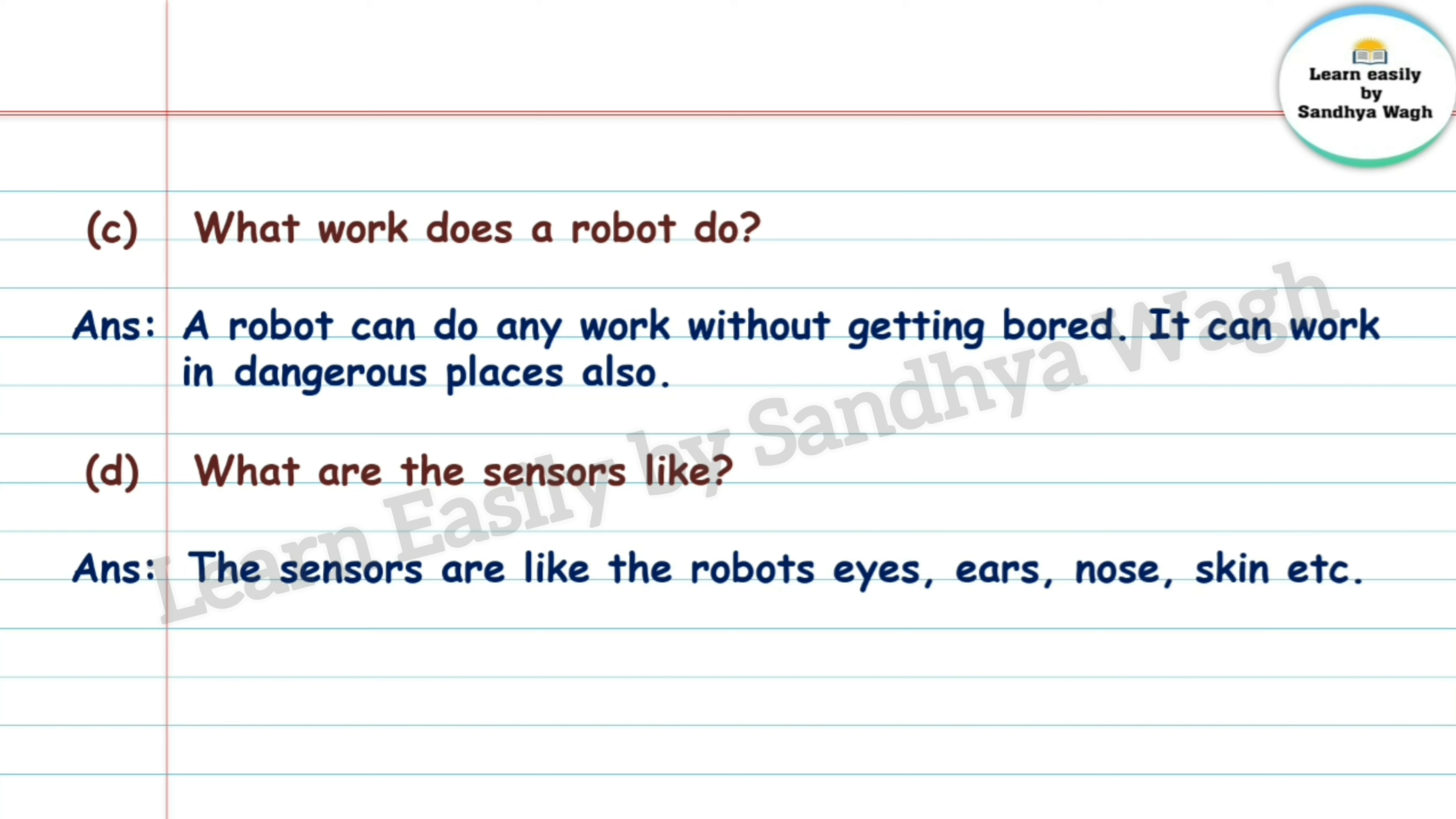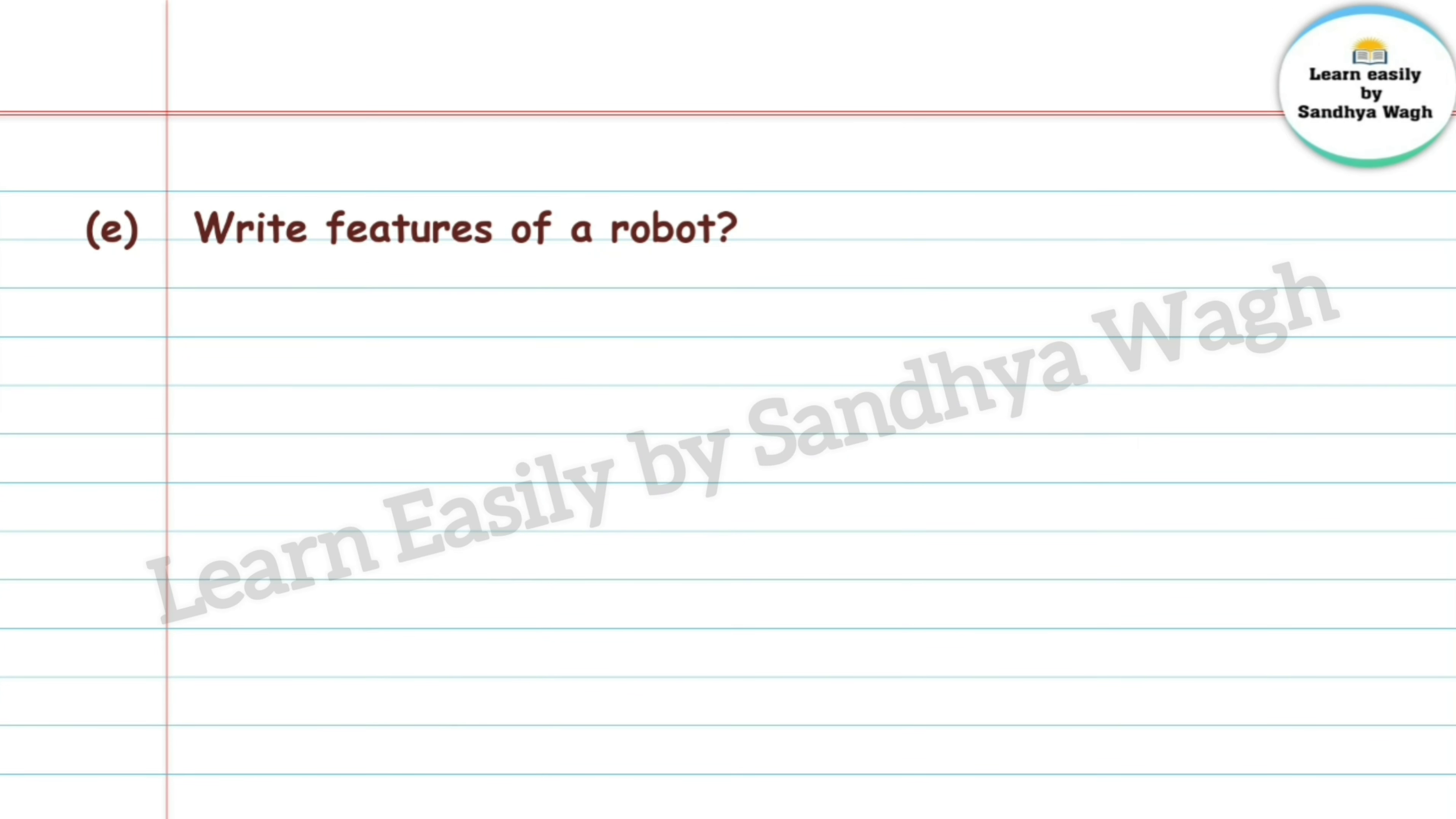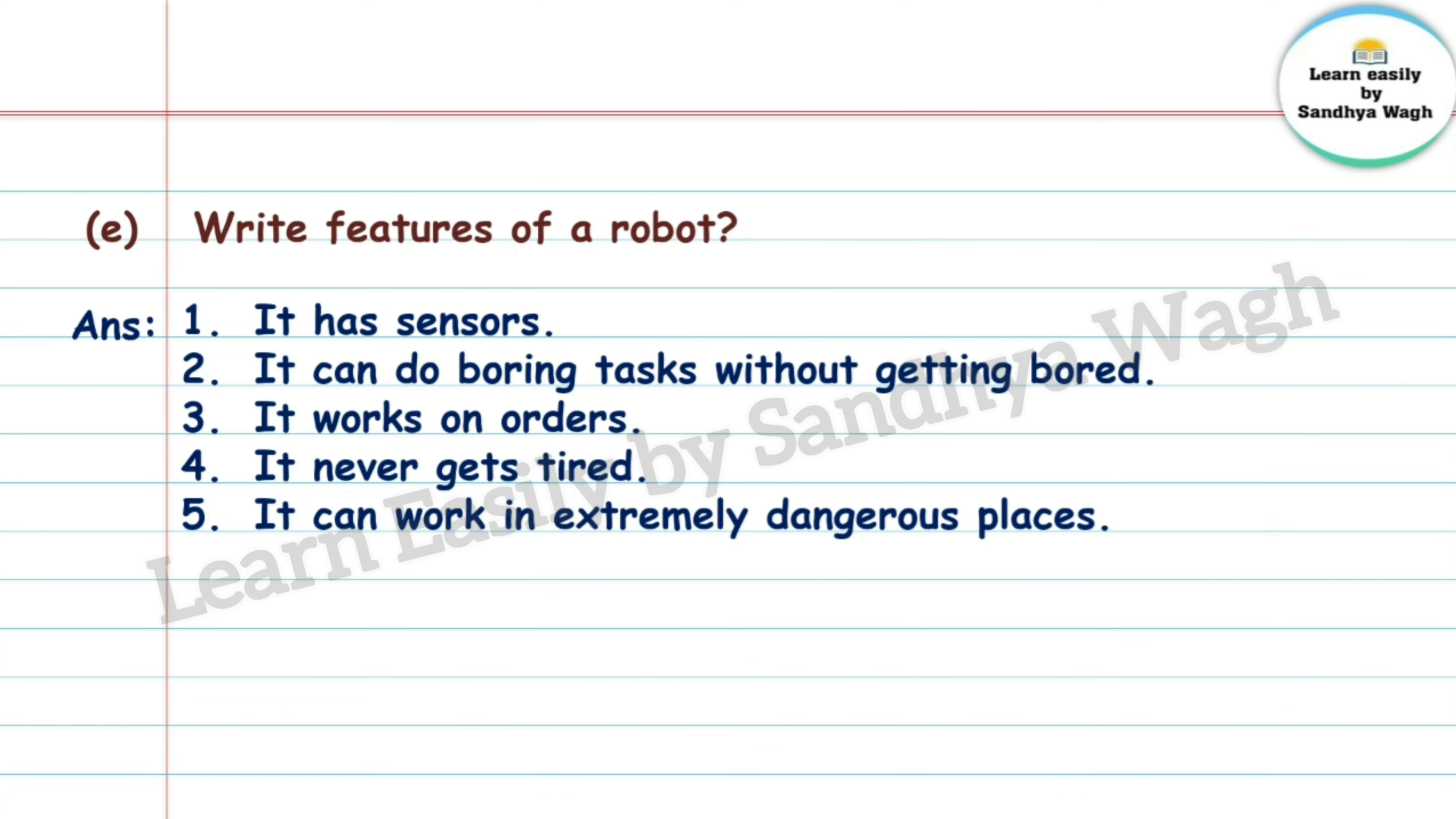E. Write features of a robot. Answer: It has sensors, it can do boring tasks without getting bored, it works on orders, it never gets tired, it can work in extremely dangerous places.